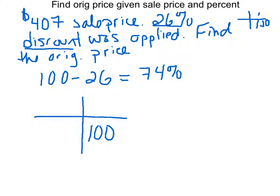If we use our handy-dandy grid, we always put 100 in that grid, right? We have a percent sign and we have the word 'of'. So what we can reword this problem now is: 407 is 74% of what number? That's how we can reword the problem.